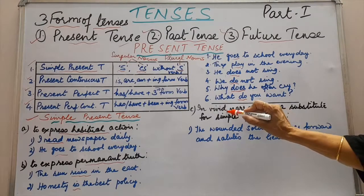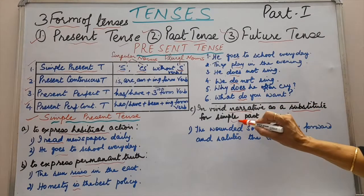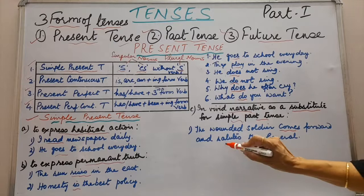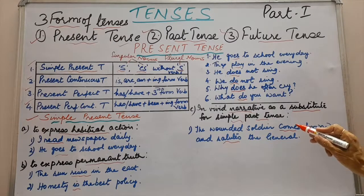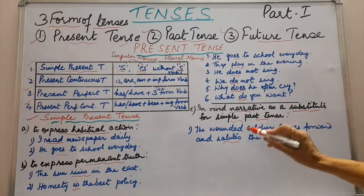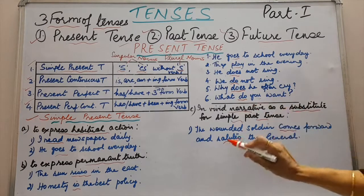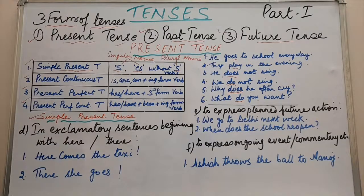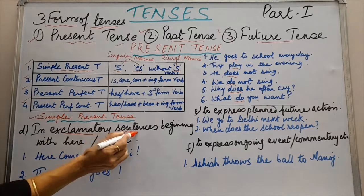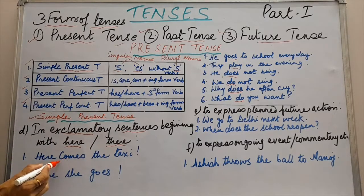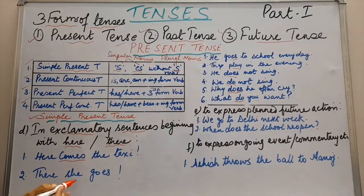Third situation is in vivid narrative as a substitute for simple past tense. Example: the wounded soldier comes forward and salutes the general. There are two verbs in this sentence — both have been used in simple present tense. Next is in exclamatory sentences beginning with here or there. Example: here comes the taxi — comes is the verb, used in simple present tense. There she goes — goes is the verb used in simple present tense.